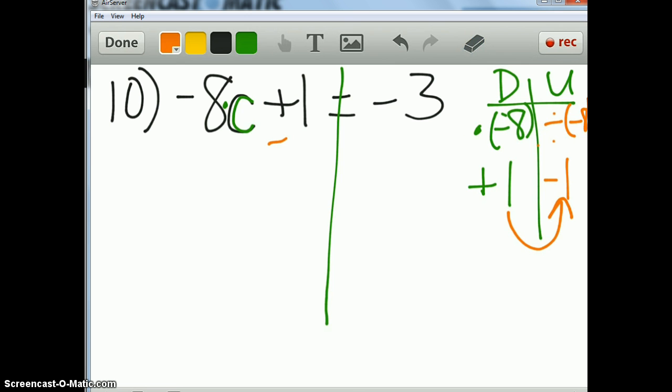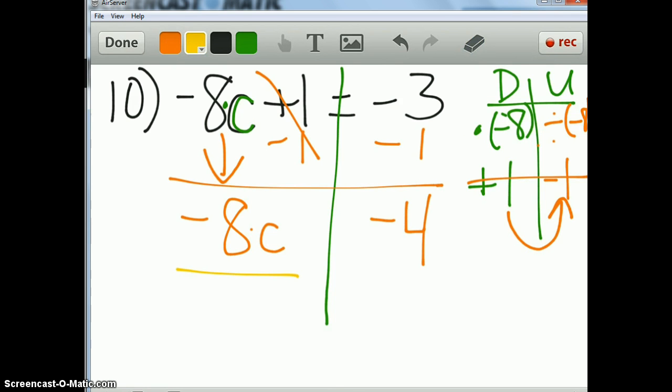So I'm going to subtract the 1 from both sides. Be really careful. It's 3 degrees below 0, the temperature drops a degree, now you're at negative 4. This cancels out to 0, so I don't have to write it, and then I rewrite the negative 8C down lower. Now I see that's times up here, so I did this. Now I'm going to divide by negative 8.